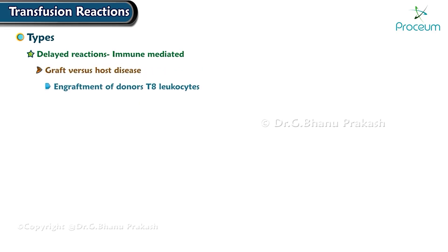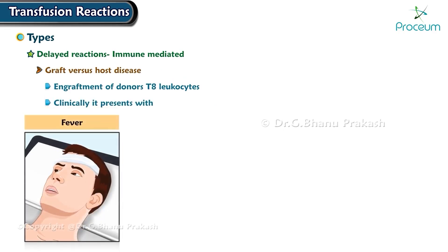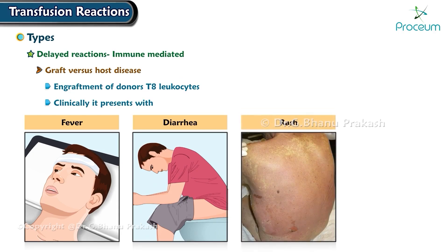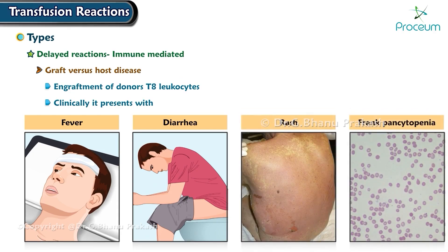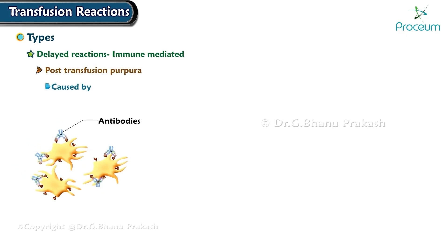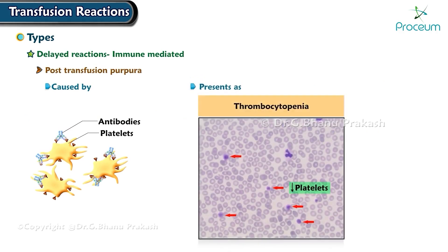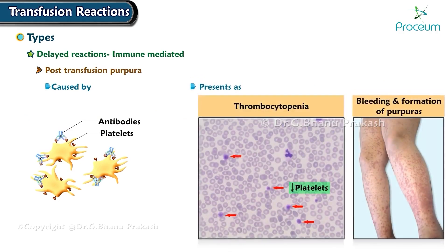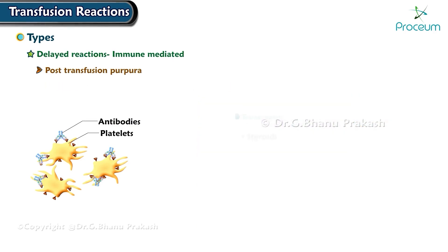Graft versus host disease is caused by engraftment of donor T-lymphocytes and clinically presents with fever, diarrhea, rash, and even frank pancytopenia. Use of irradiated blood is advised in susceptible cases. Post-transfusion purpura is caused by antibodies working against platelets, presenting as thrombocytopenia, bleeding, and formation of purpuras. Steroids, intravenous immunoglobulins, and plasmapheresis can be given as treatment.